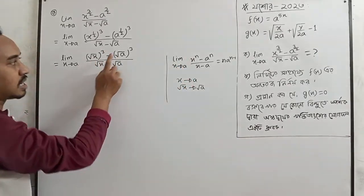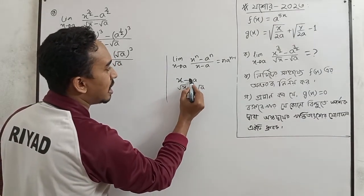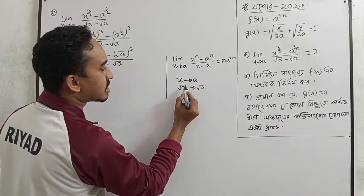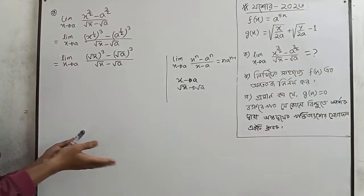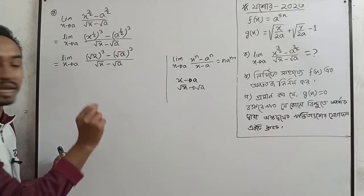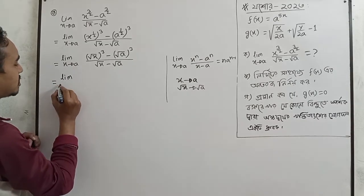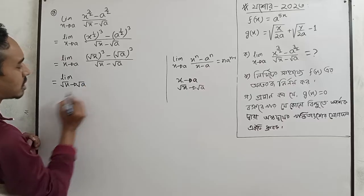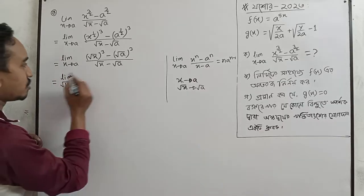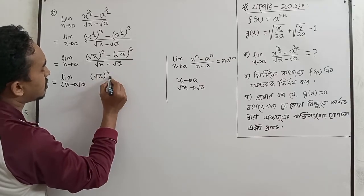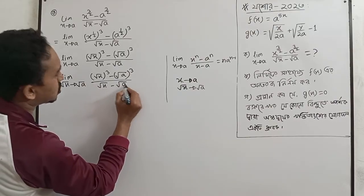That means x tends to root x and x tends to root a. We used x tends to a, so we can write: when x tends to a, root x tends to root a. Now look, the problem becomes root x to the power 3 minus root a to the power 3 divided by root x minus root a.